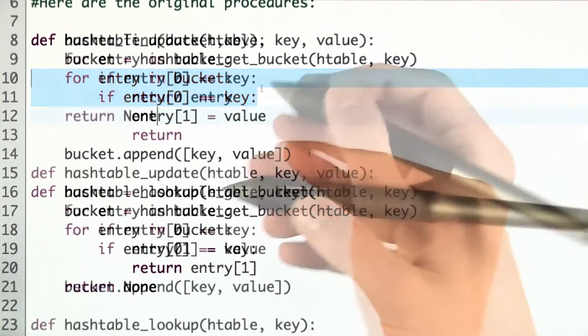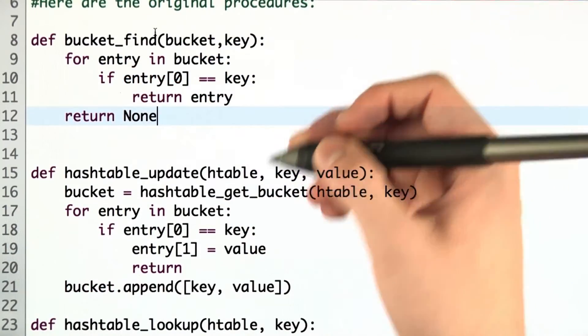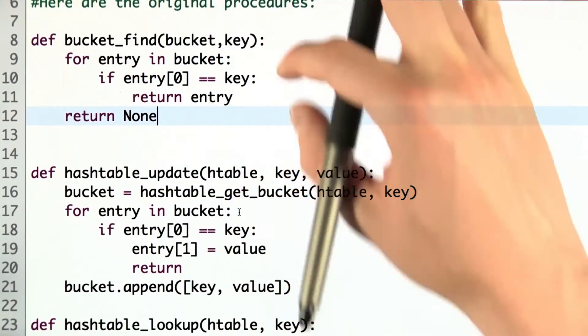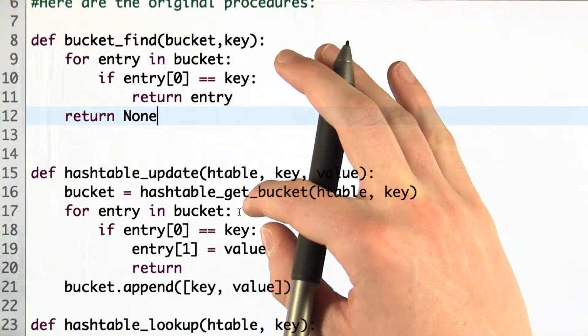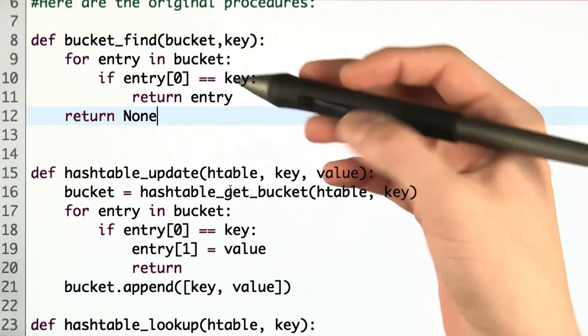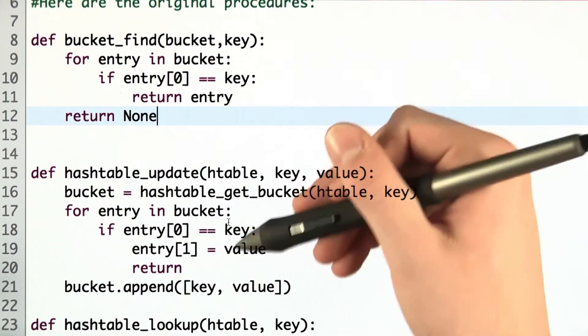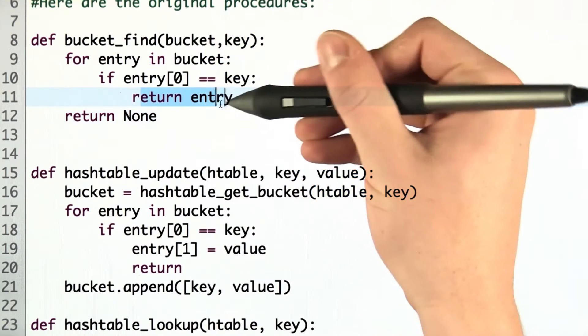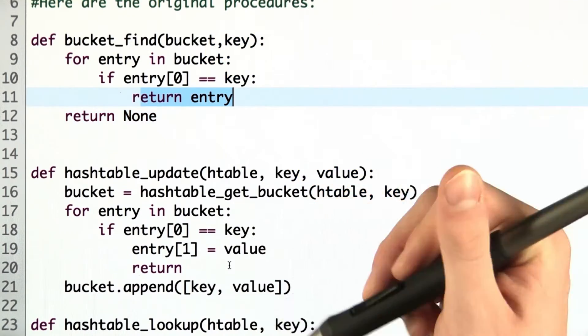So let's give it a try. Here, I've created a new function called bucket_find. You should see that it's very similar to the code that we have in update and lookup, in that we're going to go through the bucket, searching for the entry whose first value is the key, and then returning the entire entry so that we can use it accordingly in both update and lookup.